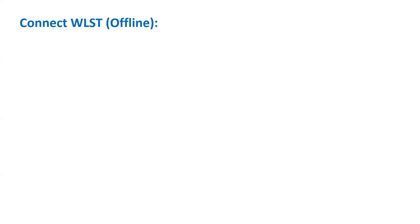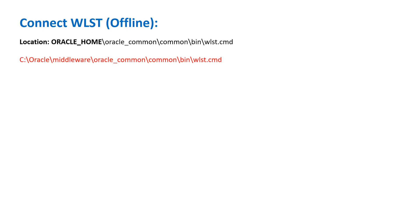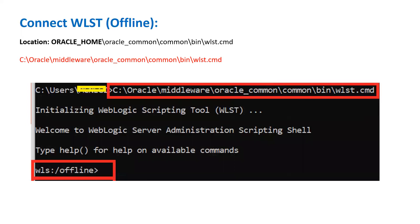The first basic thing is how we can run the WLST command and connect with WLST. Just like we have different kinds of prompts in Windows and other operating systems, similarly for WLST there is a different prompt. To execute any WLST command, you have to run a script called wlst.cmd on Windows or wlst.sh on Unix systems. The location of that script is your Oracle Home, then oracle_common, then common, then bin.